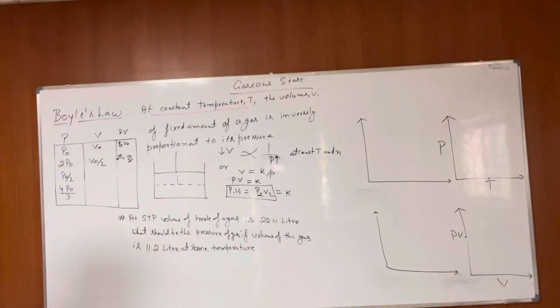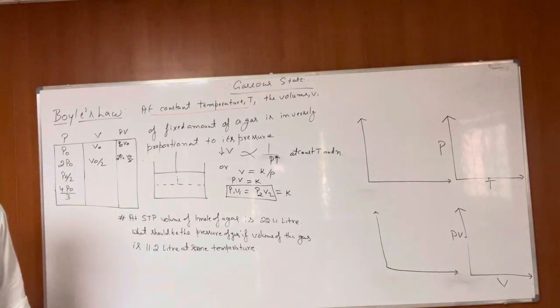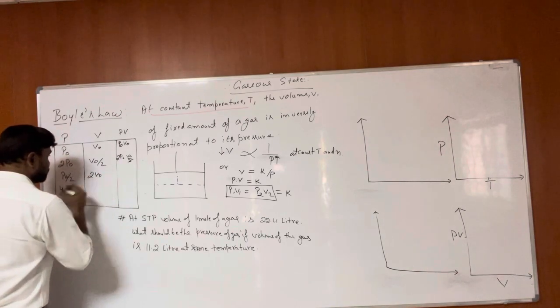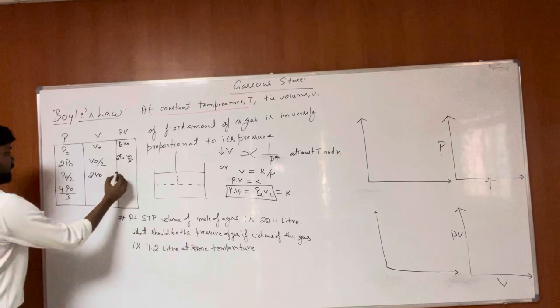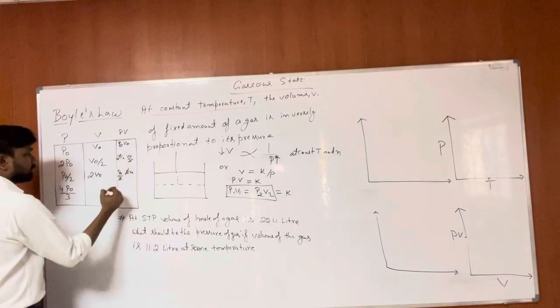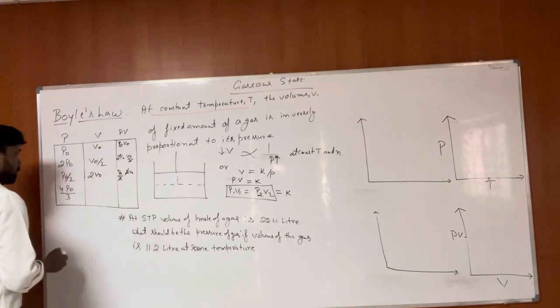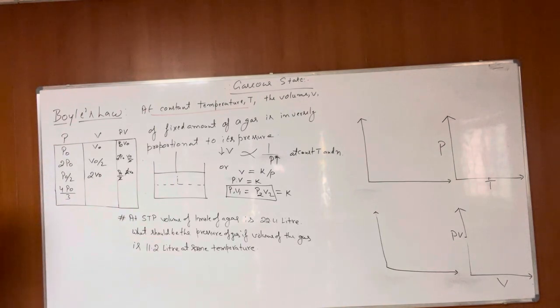If we reduce pressure by 50 percent to P0/2, volume will be 2V0 because we need the product to be constant. So P0/2 times 2V0 gives us P0 times V0. Similarly, if pressure is 3P0, volume will be V0/3.